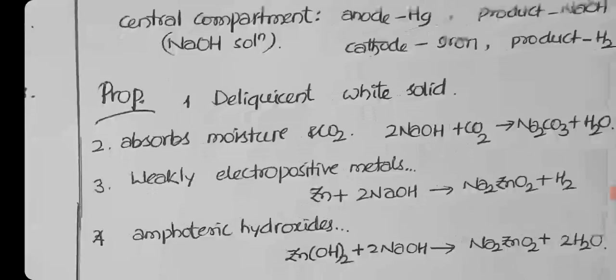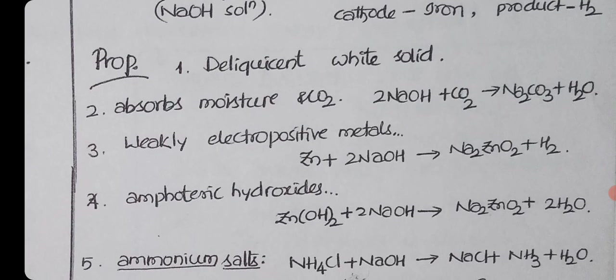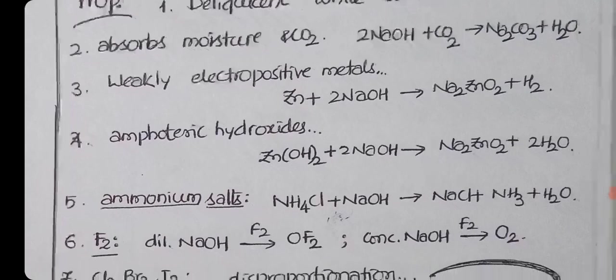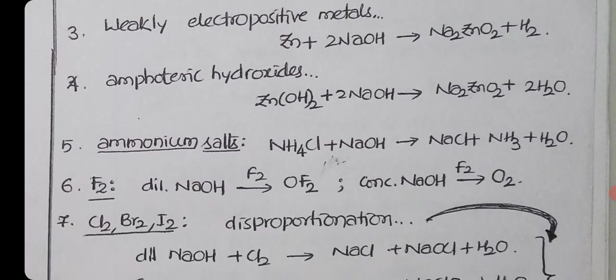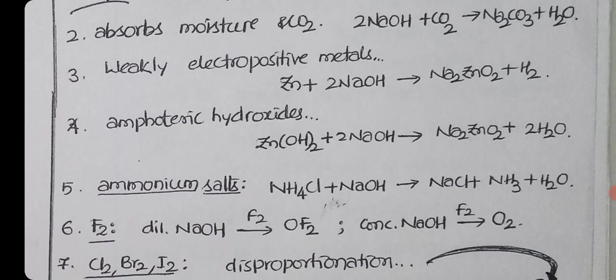Properties of sodium hydroxide are very special. It is a deliquescent white solid. Deliquescent means absorbs moisture and dissolves in that moisture. Hygroscopic means absorbs moisture. Efflorescent means loses water. Absorbs moisture and CO2. NaOH plus CO2 gives Na2CO3. Weakly electropositive metals: when you take zinc type compounds, it reacts with them and forms sodium zincate and hydrogen. Aluminum also.